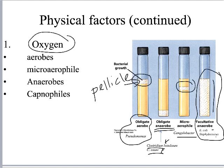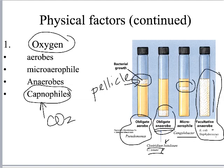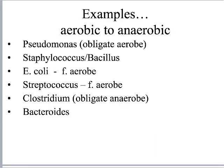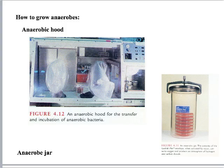Oxygen is a very important factor. Growing obligate anaerobes can be tricky because you need to remove all the oxygen from the environment. A capnophile — 'capnia' meaning carbon dioxide — is an organism that likes high CO₂ conditions. You don't need to memorize that.